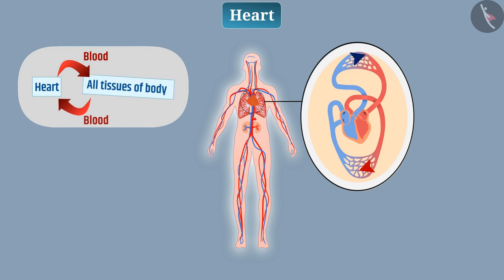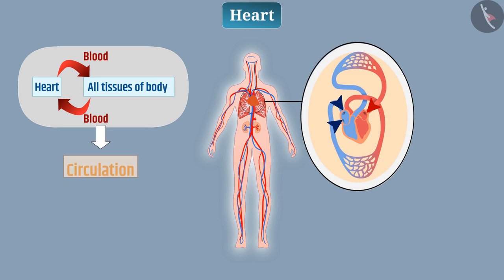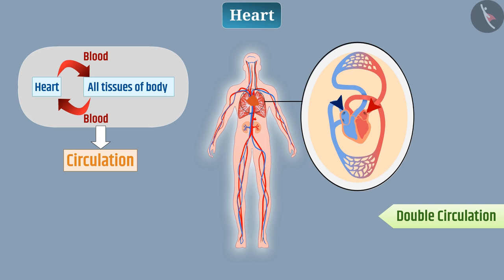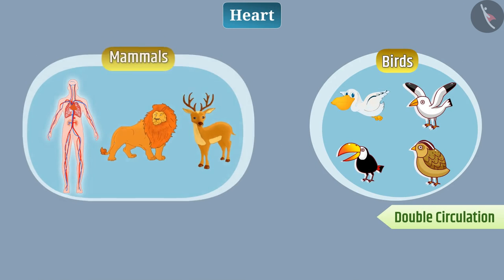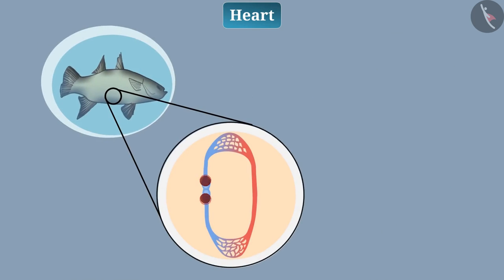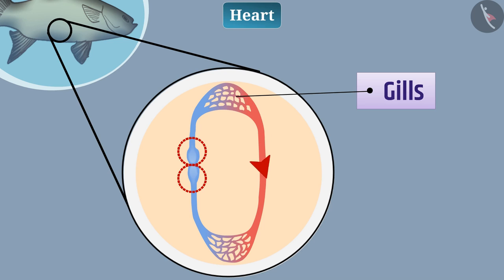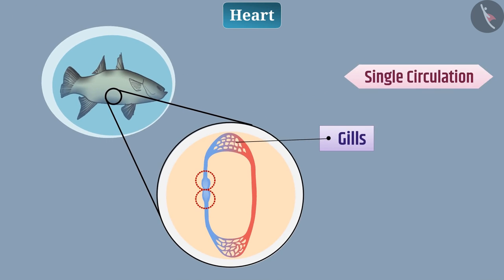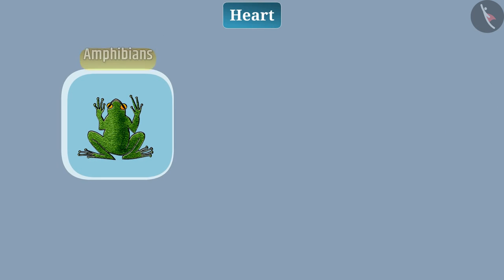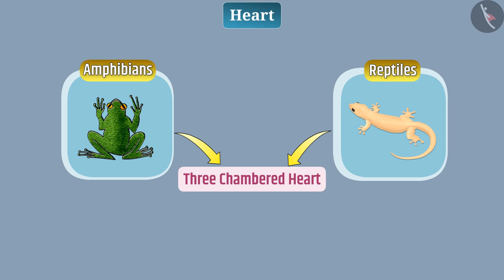The continuous movement of blood from the heart to all tissues and back is called circulation. Since blood enters the heart twice in each cycle, it is called double circulation — birds and mammals have double circulation. Fish have two-chambered hearts with single circulation, where blood passes through the gills for oxygenation once per cycle. Amphibians and reptiles have three-chambered hearts, so some deoxygenated blood mixes with oxygenated blood.